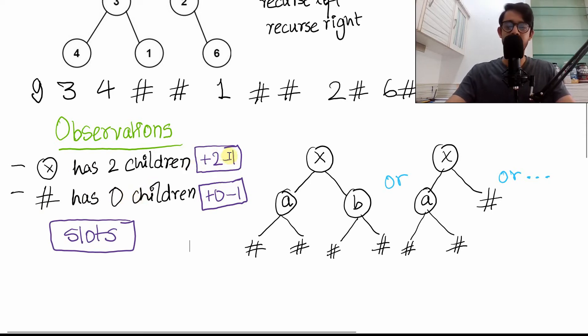There's one more thing. Those nodes themselves consume one space. So a node like X would consume one space and create two more. So plus two and then minus one, right? An invalid node similarly will produce zero more nodes and consume one. Basically this gives the sum of plus one. This gives the sum of minus one.